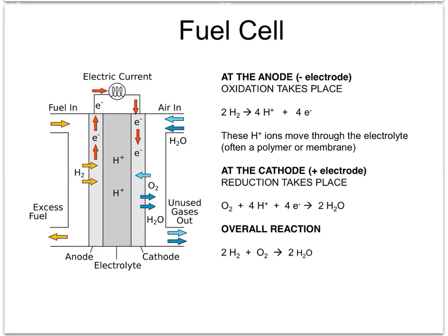Fuel, in the form of hydrogen, comes in at one electrode, and in the form of oxygen or air, comes in at the other. The hydrogen gas, H2, here shown happening at the anode, converts into four hydrogen ions.